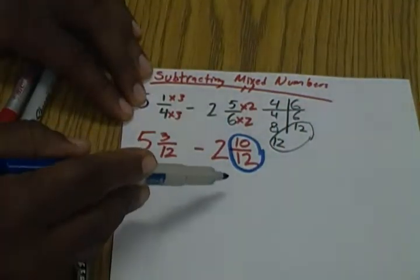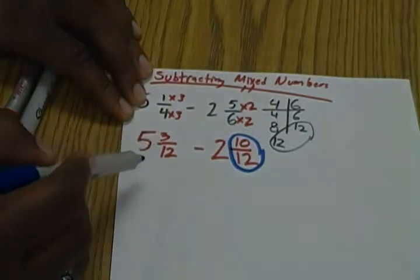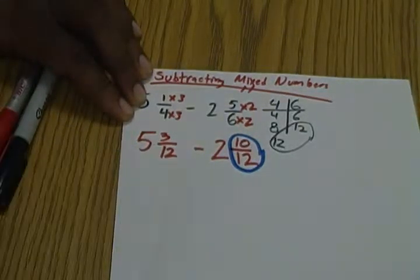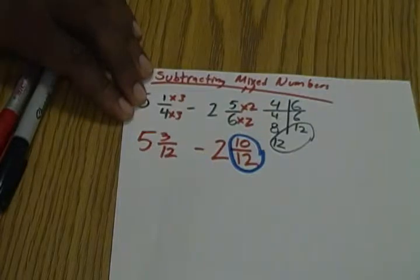So if our second fraction is bigger, that means we have to regroup. If our first fraction were circled, we can just subtract from here.